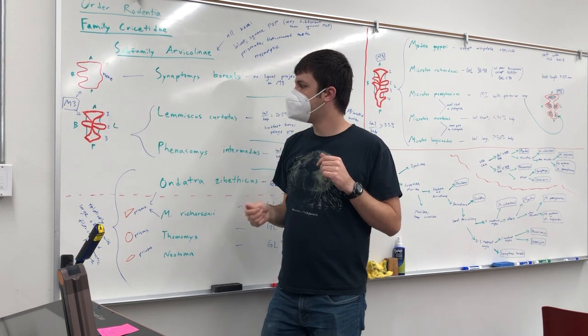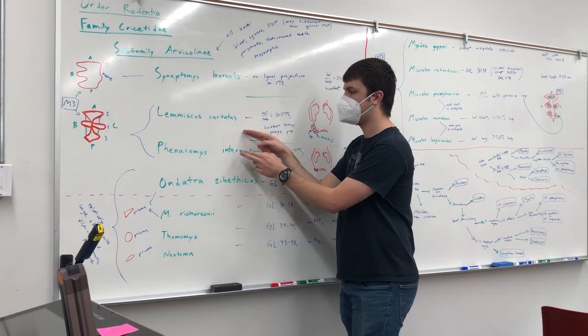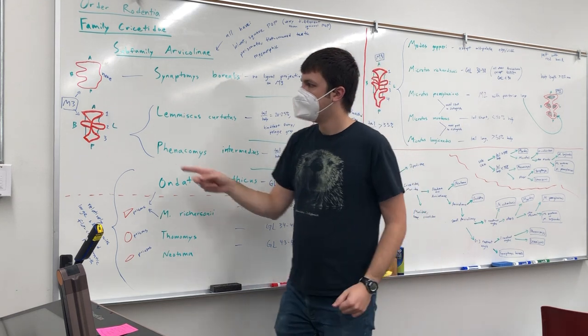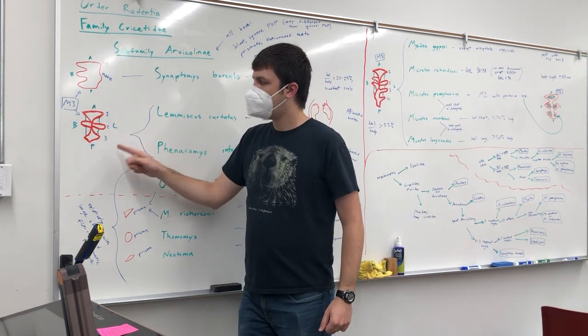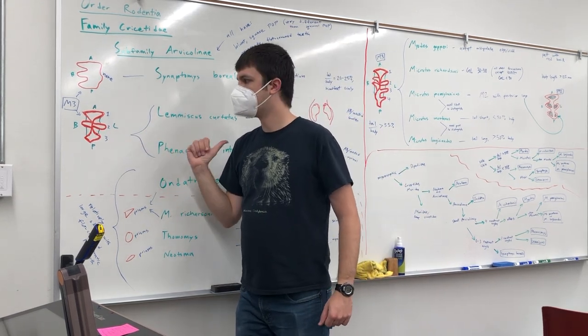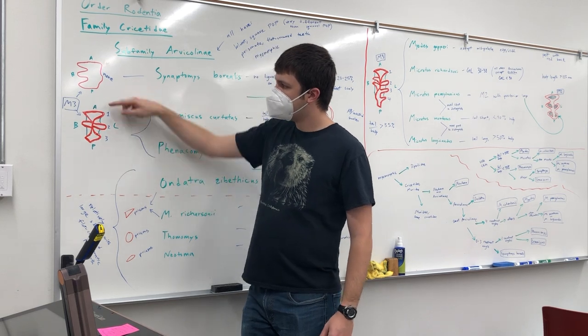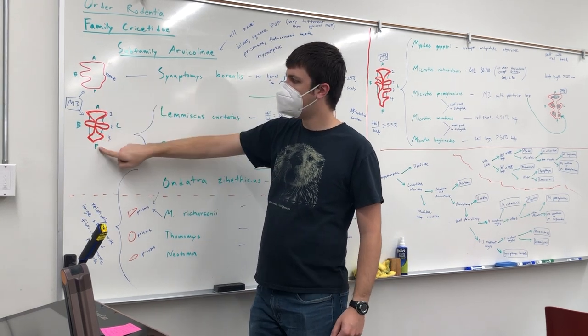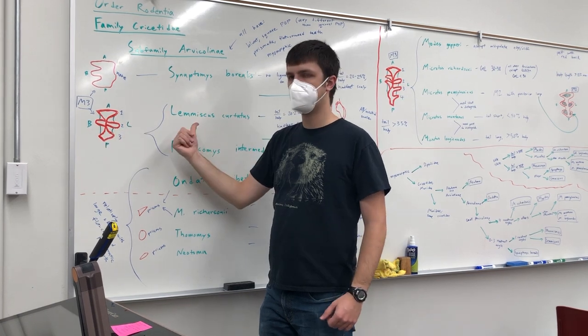In contrast, if you look at these two, Lemiscus curtatus and Phenacomys intermedius, you see one, two, three angles sticking inwards towards the tongue. These letters here: anterior forward, posterior back, buccal cheek-side, lingual tongue-side.